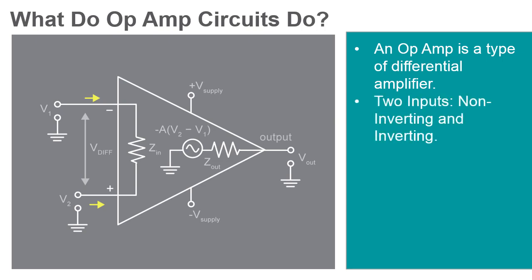An op amp's inputs typically consist of a non-inverting input, usually marked with a plus symbol, and an inverting input, usually marked with a minus symbol. Ideally, the op amp amplifies only the difference between the two inputs, which is called the differential input voltage.